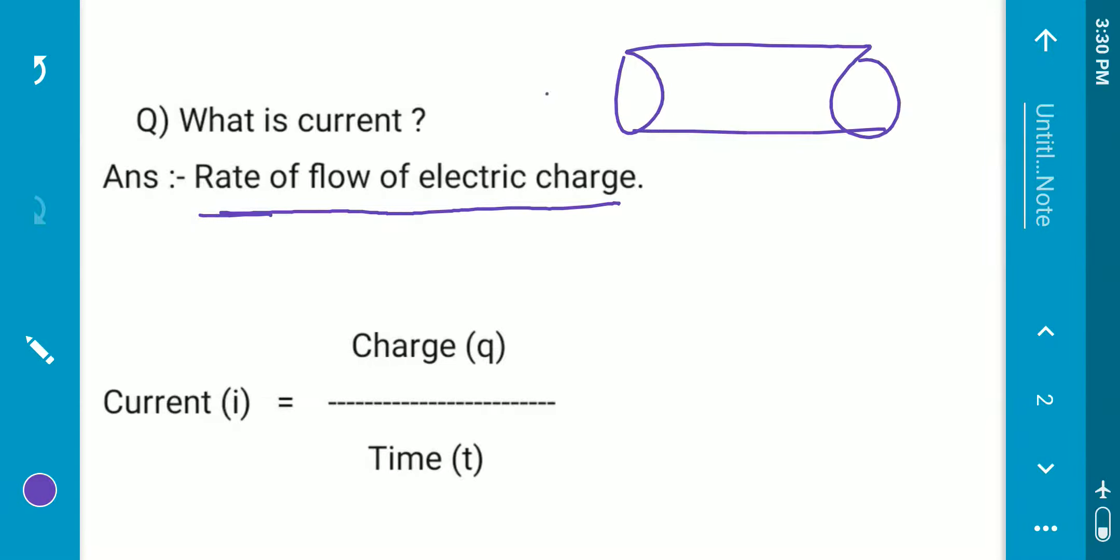If the charge is flowing, if the magnitude of the charge is 10 Coulomb and the time of flowing be 5 second, then the current will be 10 Coulomb by 5 second equals to 2 ampere. Hope you have understood.